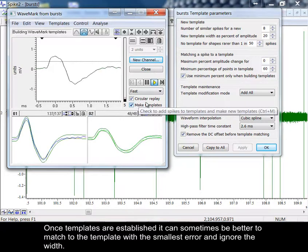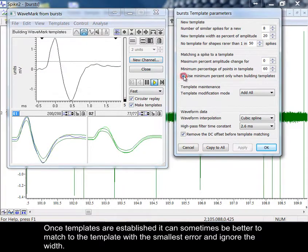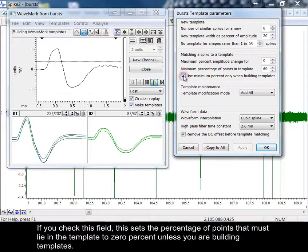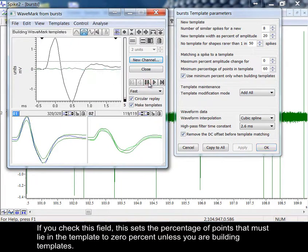Once templates are established, it can sometimes be better to match to the template with the smallest error and ignore the width. If you check this field, this sets the percentage of points that must lie in the template to 0% unless you are building templates.